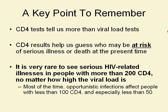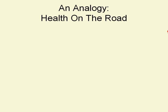Most of the time, opportunistic infections are seen in people with less than 100 CD4 cells, and especially less than 50 CD4 cells. It's really rare to see them in people with more than that — not impossible, but rare.